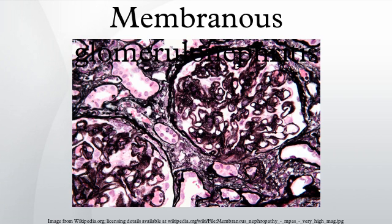Membranous glomerulonephritis is a slowly progressive disease of the kidney affecting mostly patients between ages of 30 and 50 years, usually Caucasian. It is the second most common cause of nephrotic syndrome in adults, with focal segmental glomerulosclerosis being the most common.